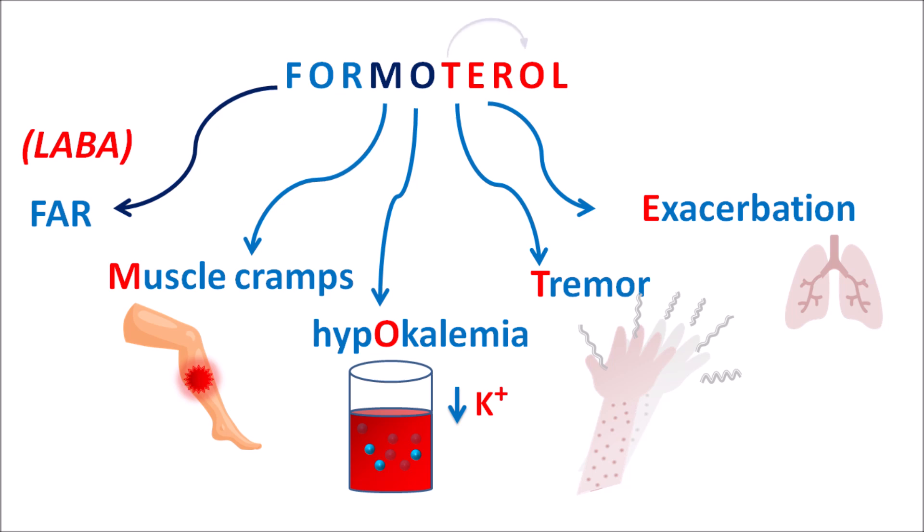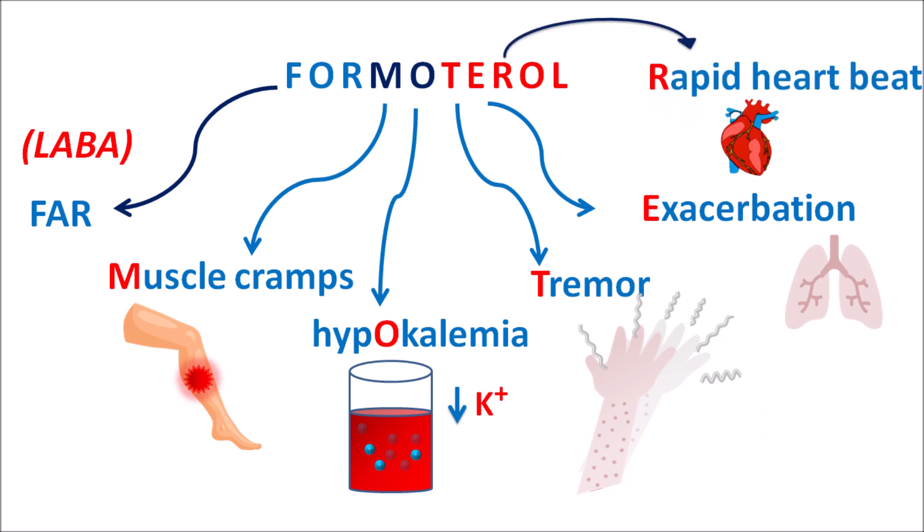The letter R can be remembered as rapid heartbeat, so Formoterol can increase the heartbeat resulting in palpitations and tachycardia. In this way we can remember the important side effects of Formoterol: M indicates muscle cramps, O indicates hypokalemia, T indicates tremor, E indicates exacerbation of bronchospasm, and R indicates rapid heartbeat.